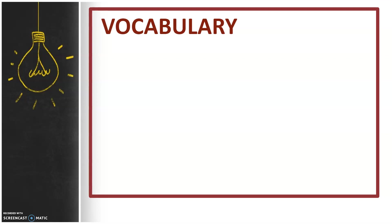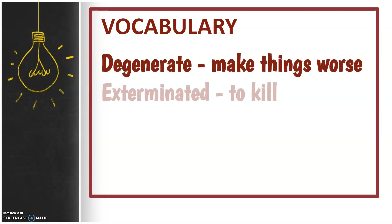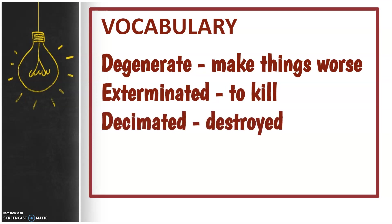When students look up words in the dictionary, often the definition provided includes words that students are unfamiliar with. One solution is to use Longman Dictionary for English learners, which can be located online and provides student-friendly definitions. For this graphic organizer, I record student-friendly definitions provided by the class, based on the images from the prior screen. For 'degenerate,' students often say 'make things worse.' 'Exterminated' means to kill. 'Decimated' means destroyed. And finally, 'bovine' means cow.